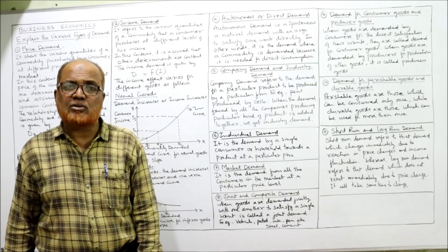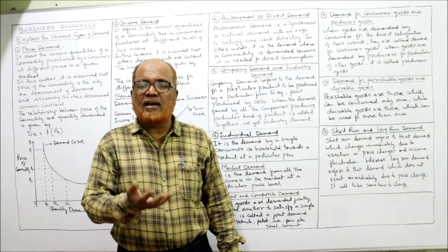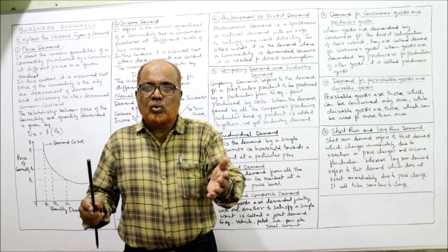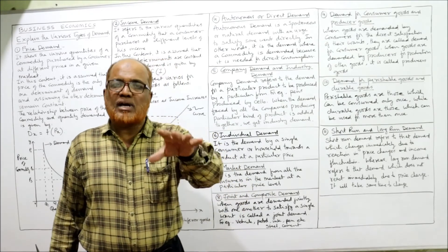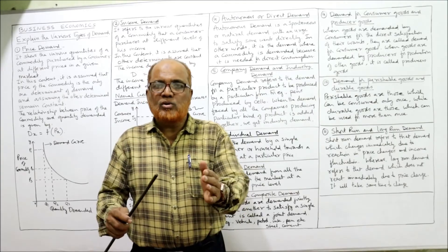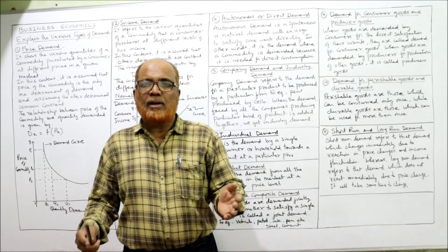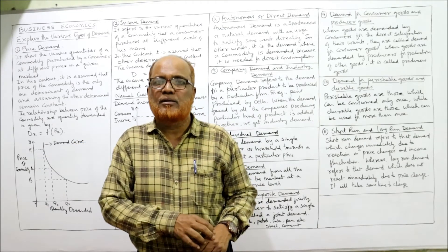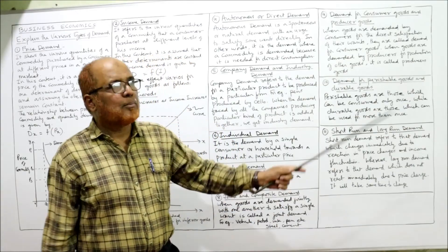Consumer goods are goods directly consumed by people to satisfy their wants — the many items we consume from morning to evening. Producer goods are goods consumed by a producer in order to produce other goods. For example, machinery required by a company to produce goods is a producer good, because it is used by producers, not individuals.